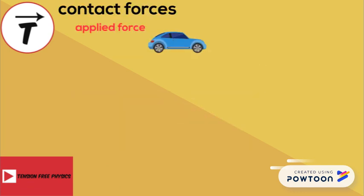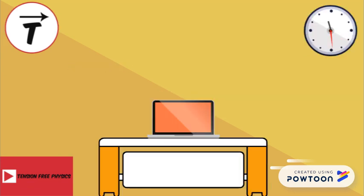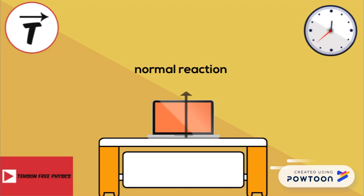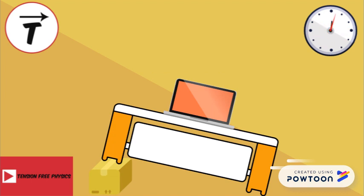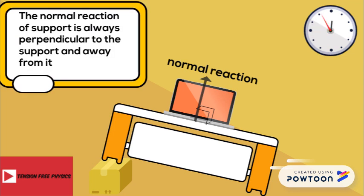The second contact force is the normal reaction of support. If we place a laptop on the table, the table exerts a force on the laptop that we call the normal reaction of support, which starts from the bottom of the laptop and is directed vertically upwards. If the table is inclined, the normal reaction of support is still perpendicular to the table surface. Remember, it is always perpendicular to the support and directed away from it.